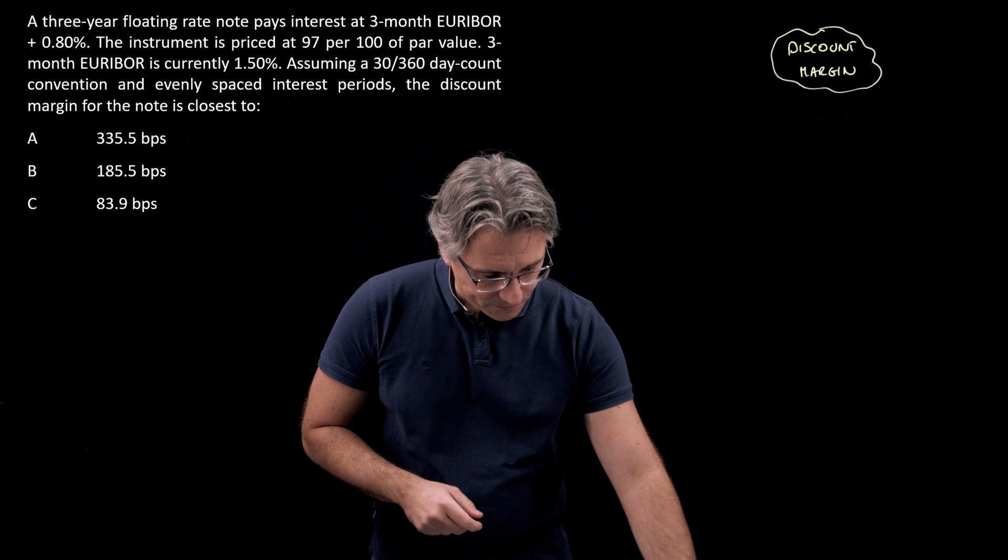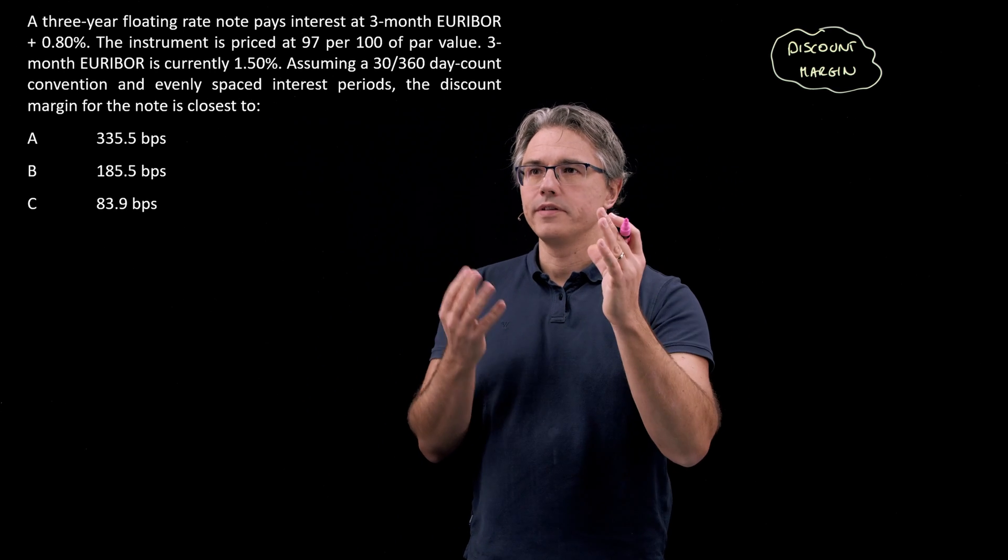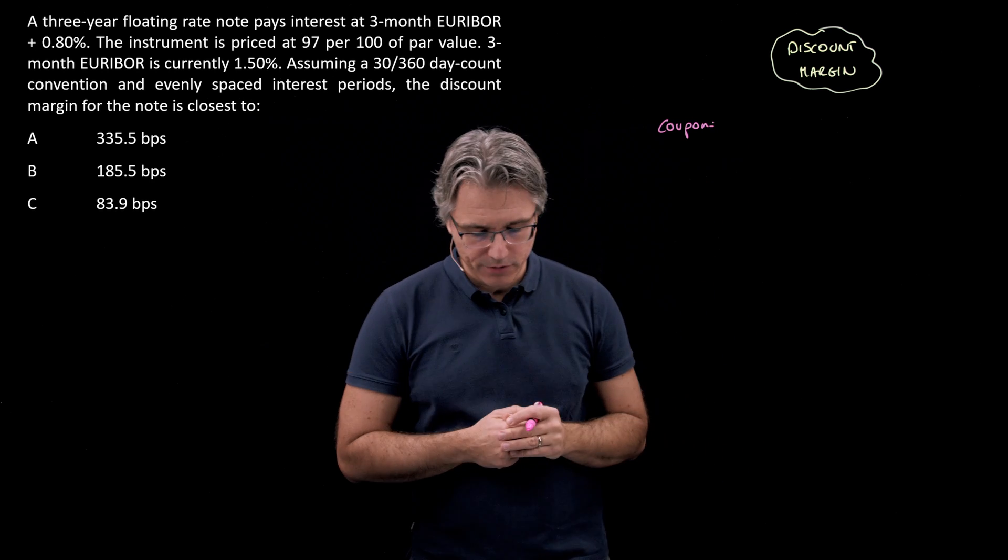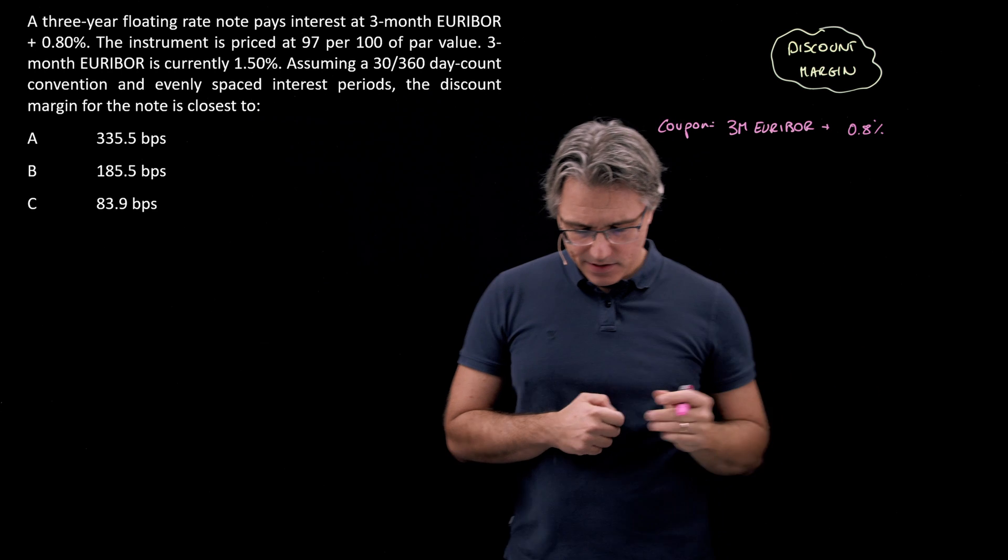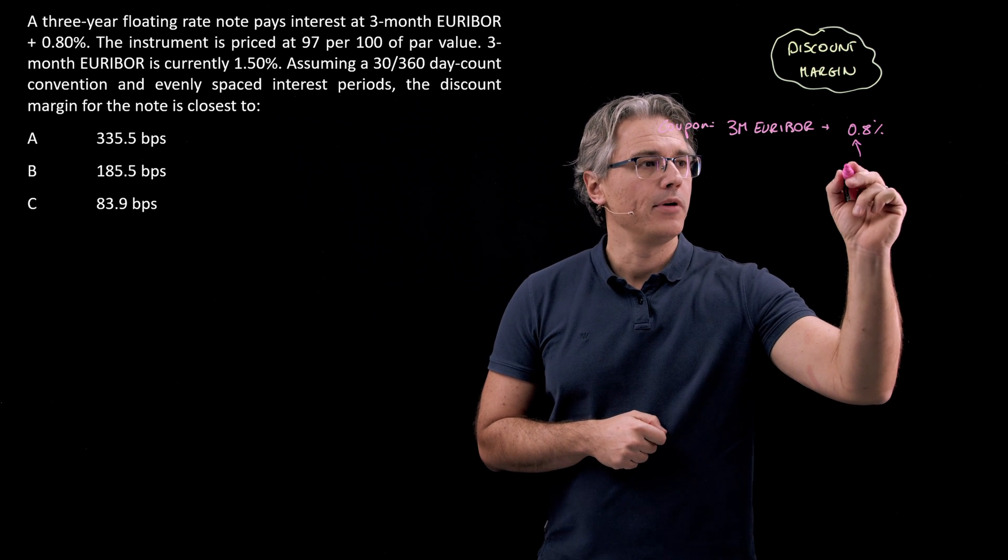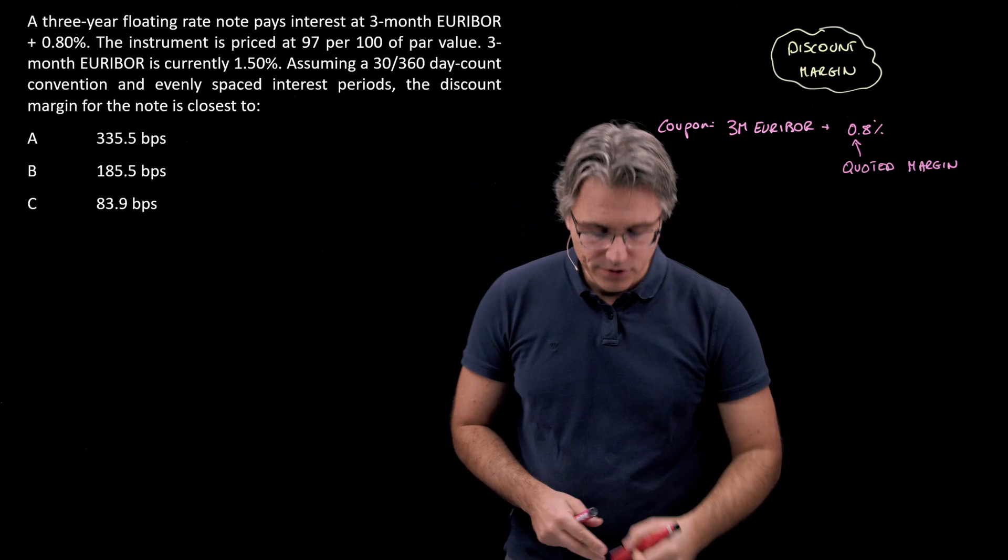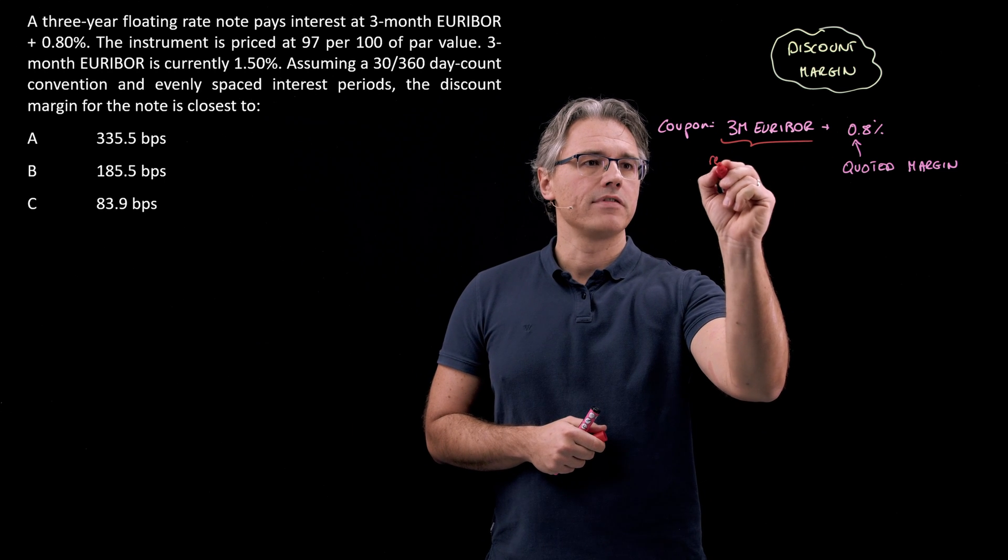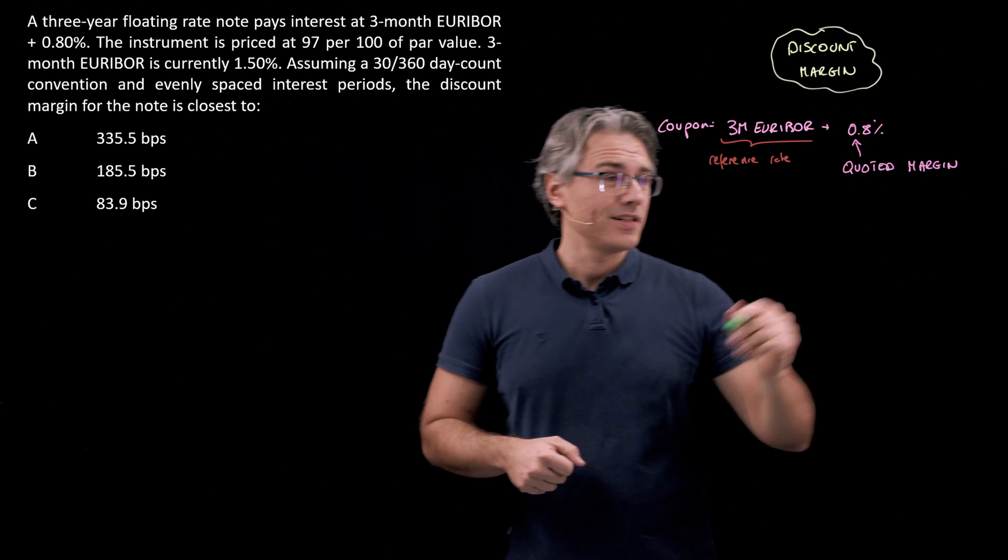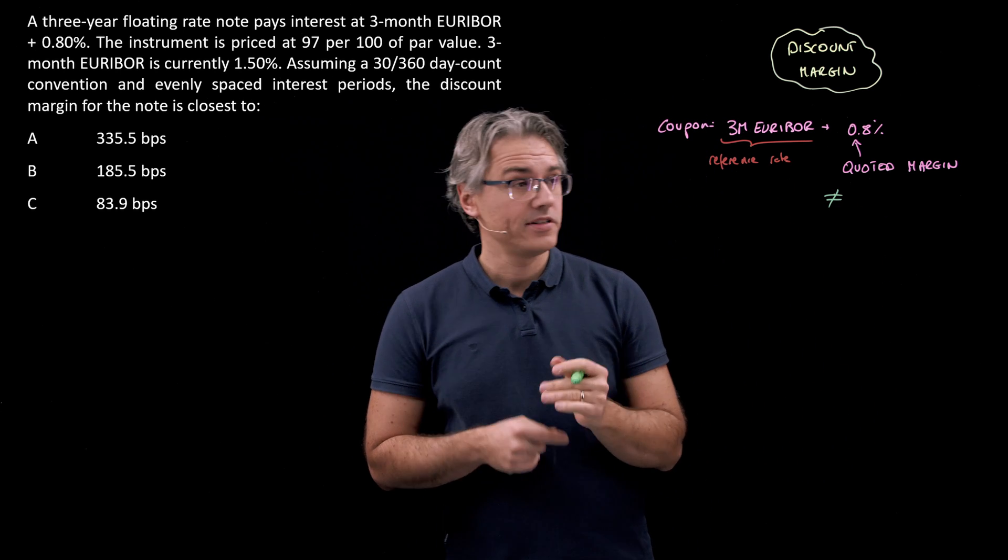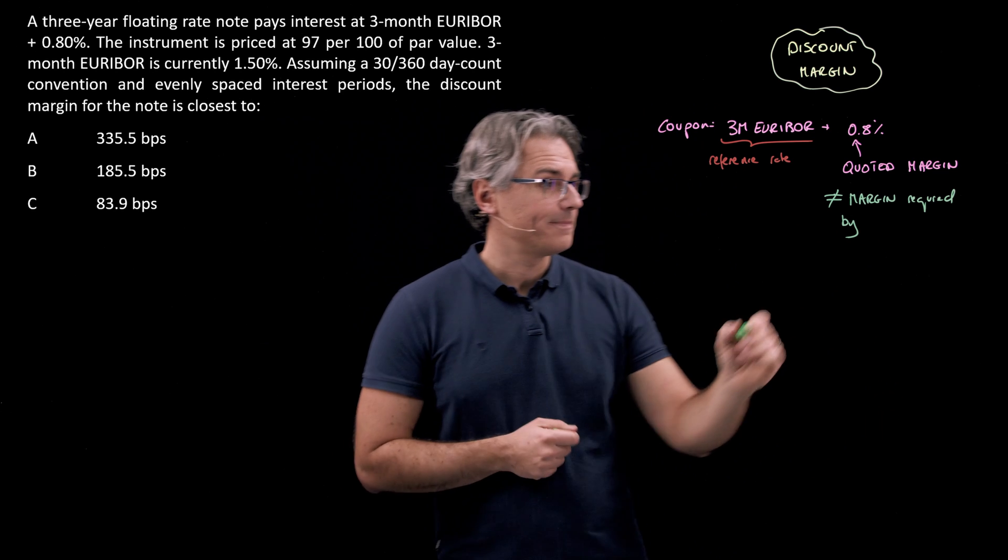Let me write down some basic information. The floating rate security pays coupon in accordance with 3M EURIBOR plus 0.8%. This 0.8% is the quoted margin, which is set when the instrument is initially issued, and this is our reference rate. Unfortunately, the quoted margin is not necessarily the margin currently required by market participants. This is not equal to the margin required by investors or the market.